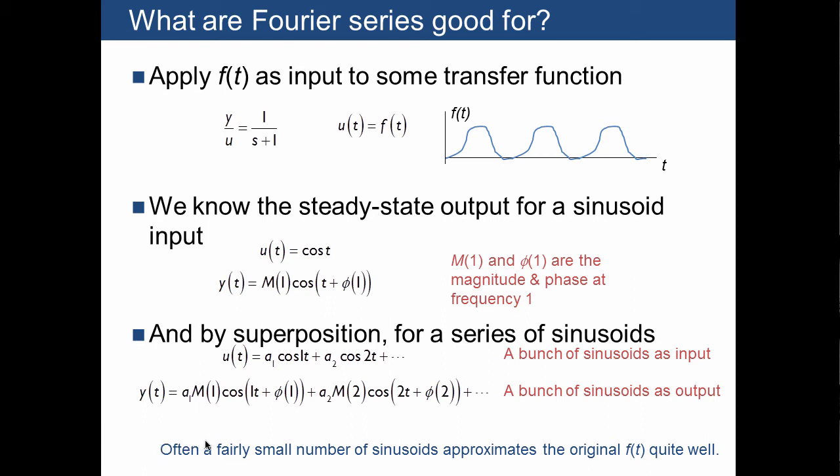Another property of Fourier transforms is that often if you have a periodic signal, you only need a fairly small number of sinusoids to reproduce f of t or at least approximate it reasonably well.